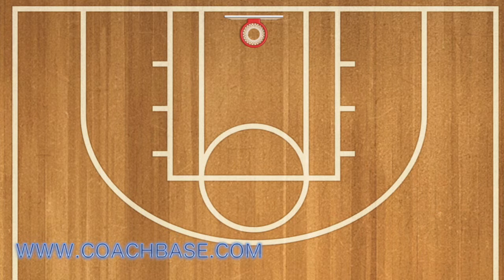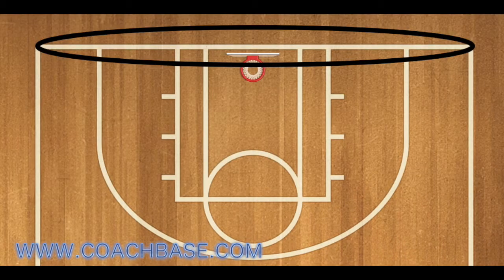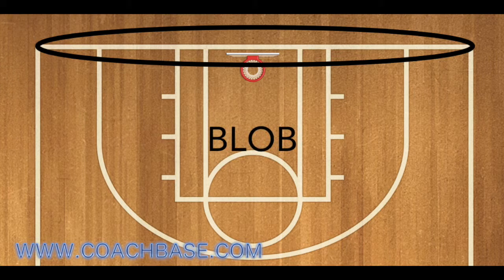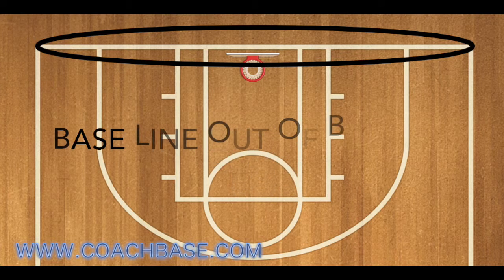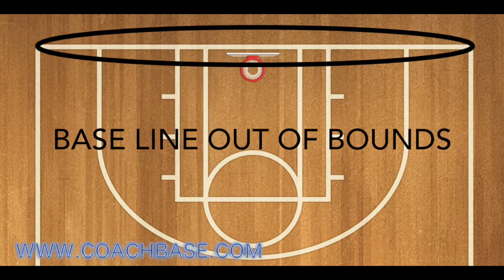Today we're going to go over what these lines on the basketball court mean. First is the baseline. You might have heard of BLOB plays — B-L-O-B — that means baseline out of bounds.